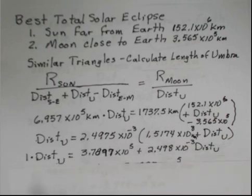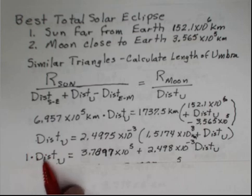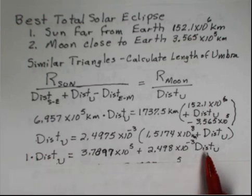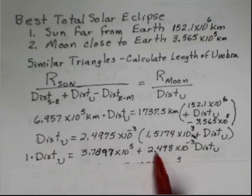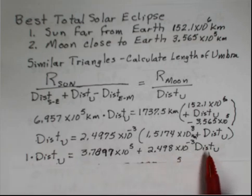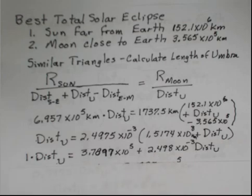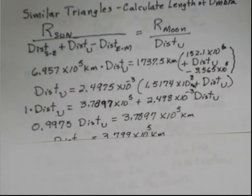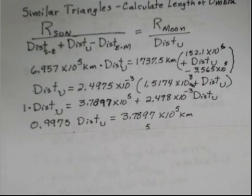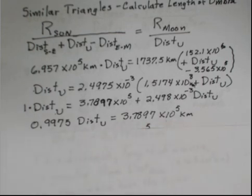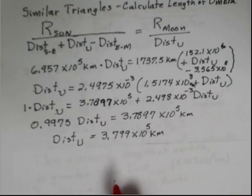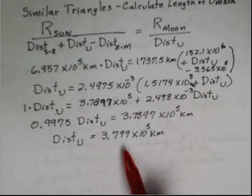And then I can always put 1 in front of a quantity. So we're about to gather like terms, and we're going to take 1 minus this coefficient. I'm going to subtract this term from both sides. So we'll do that. We get 0.9975 times the length of the umbra equals this number. We do that division. We find that the umbra has a length of 3.799 times 10 to the 5th kilometers, 380,000 kilometers.